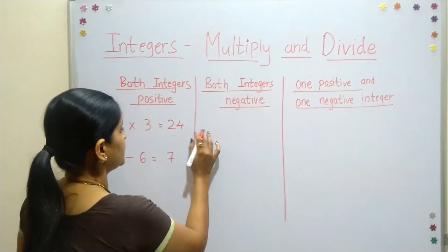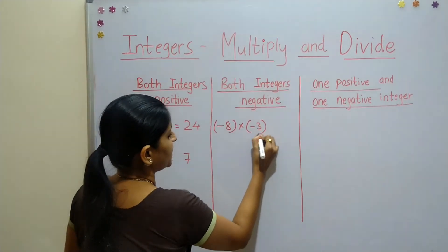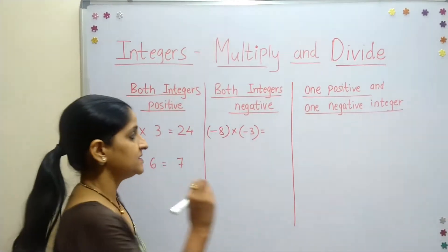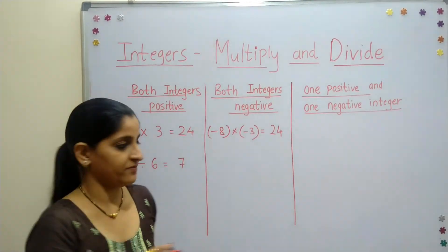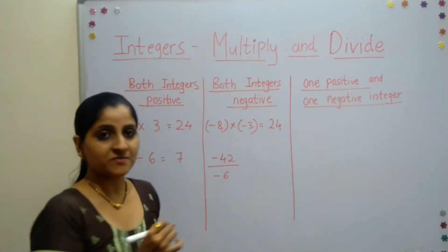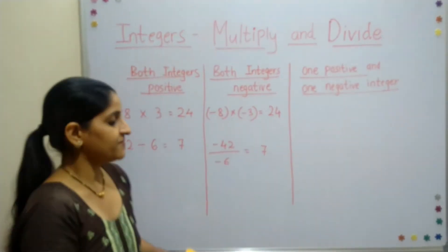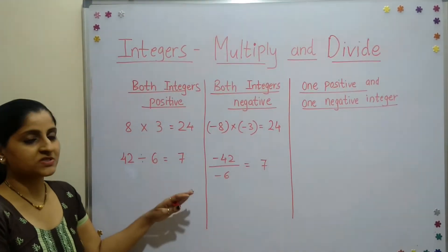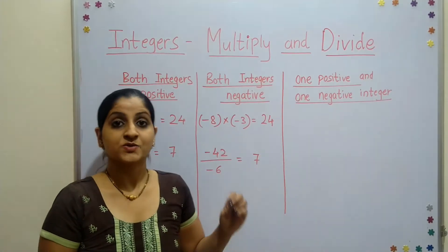Now, let's reverse the situation and make both integers negative: negative 8 multiplied by negative 3. When two negative numbers are multiplied, the answer is always positive, so my answer is positive 24. The same rule applies to division: negative 42 divided by negative 6 equals positive 7. I've kept the same numbers to show that whether both numbers are positive or both are negative, the answer is positive in both cases.